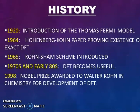What is the history? In 1920, introduction of the Thomas-Fermi model. Then in 1964, Hohenberg-Kohn paper proving existence of exact DFT. Then Kohn-Sham scheme introduced in 1965, then DFT becomes useful in early 80s. The Nobel Prize awarded to Walter Kohn in chemistry for development of DFT in 1998.